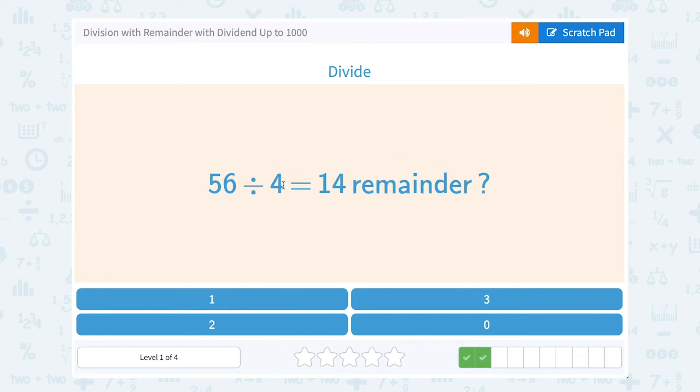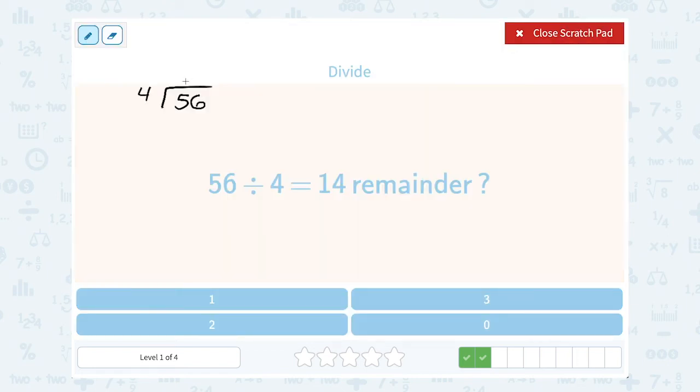56 divided by 4 equals 14 remainder what? So they're giving us part of this answer. If we divided 56 divided by 4, they're telling us that 4 goes into 56 fourteen times. So to figure out the remainder I would want to say well what is 4 times 14 and subtract it from 56 to see what I'm left with.